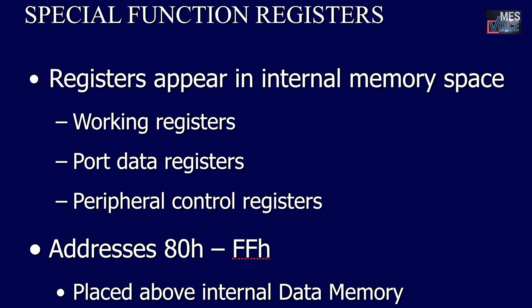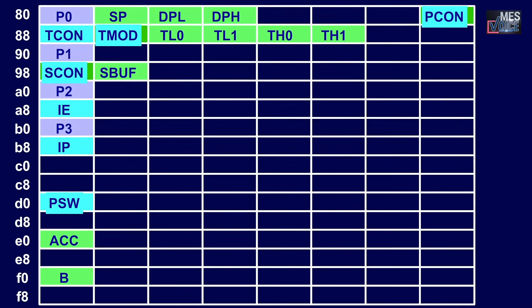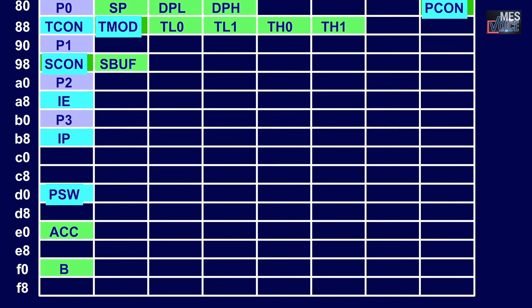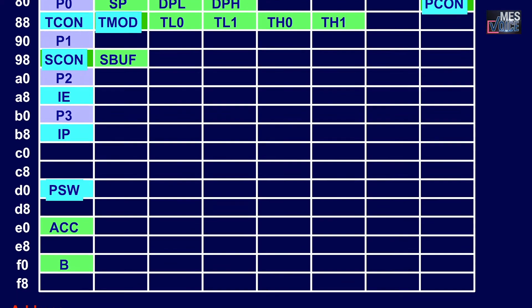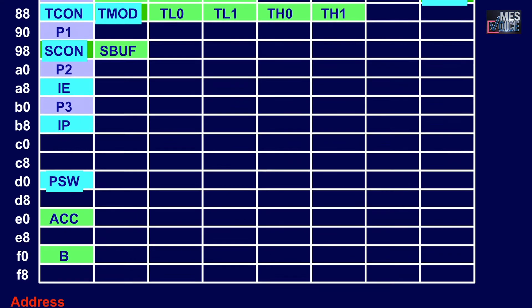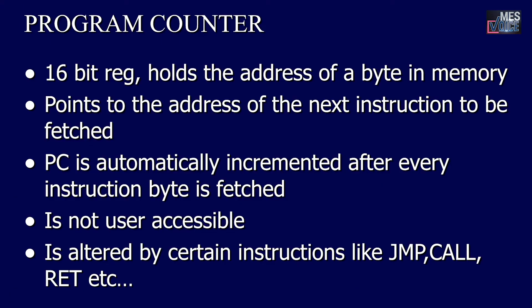Special function registers appear in the internal memory space and include working registers, port data registers, and peripheral control registers. The address is from 80H to FFH, placed above the internal data memory. This figure shows the special function registers; it consists of the accumulator, B register, and all other special function registers that can be used to control the peripherals.